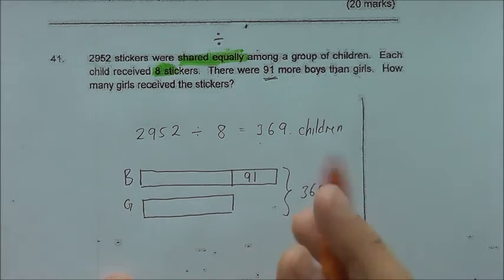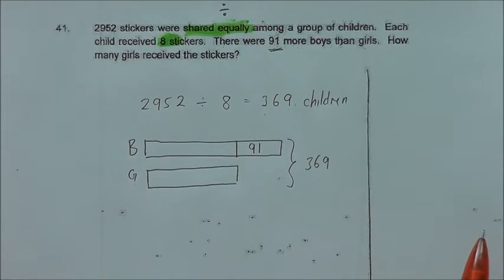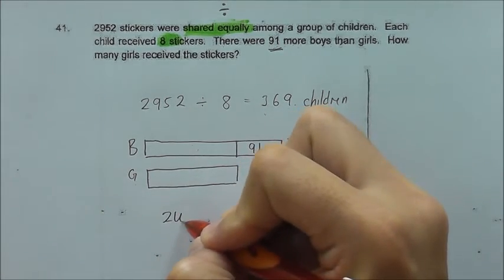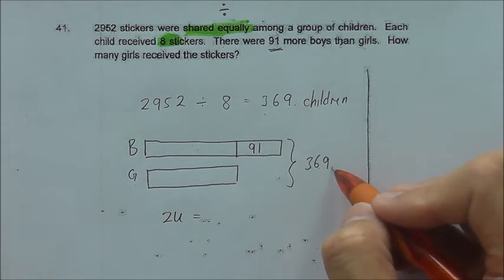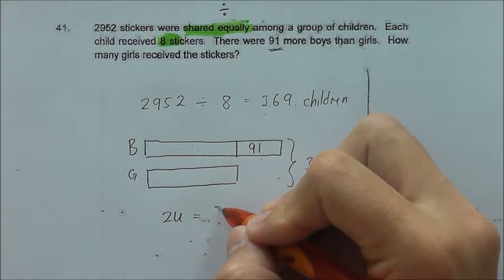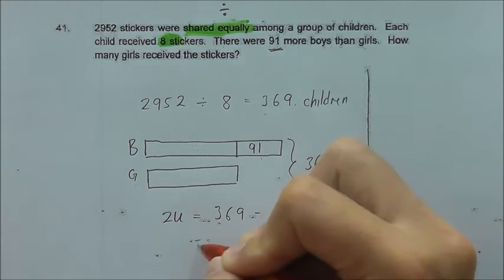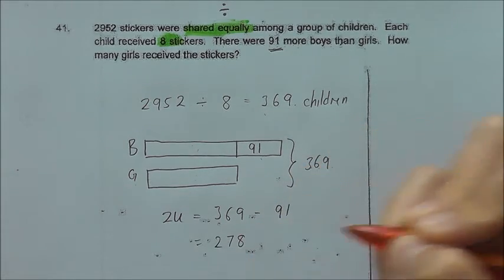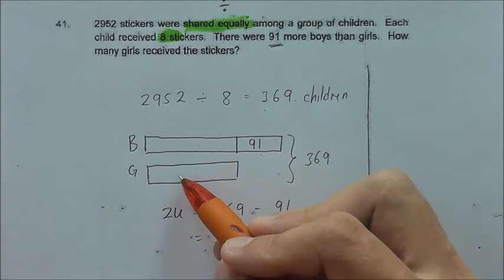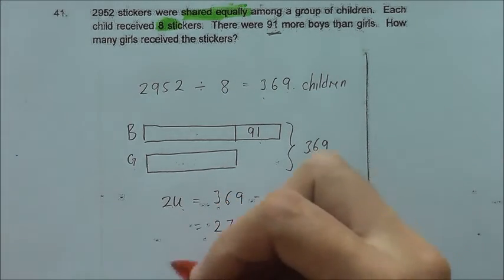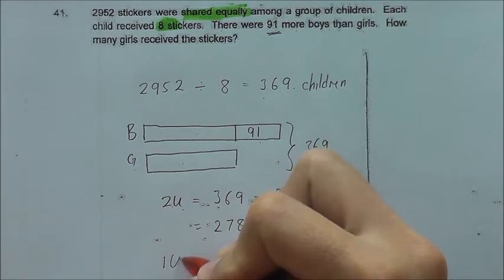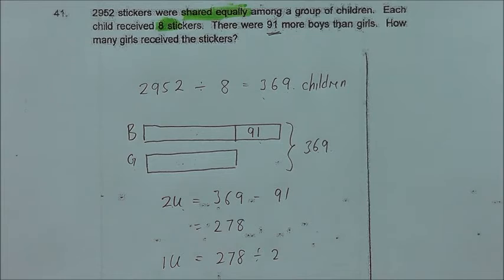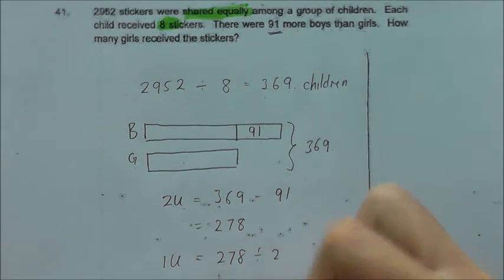Once you can draw this model, then the question becomes very simple. What we need to do is: there are 2 units here, so 2 units will be 369 minus 91. We will get 278. And to find the girls, it will be just 1 unit. So given 2 units, you just divide the total by 2, and we will be able to find what is 1 unit. It will be 139.